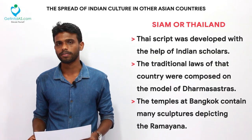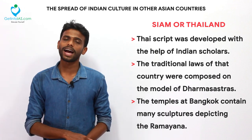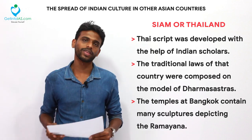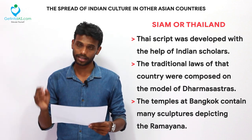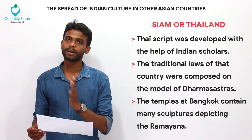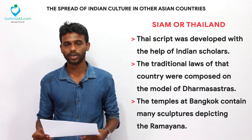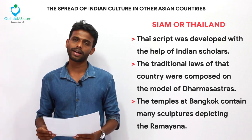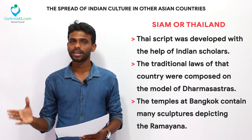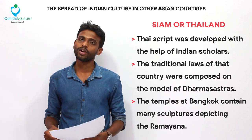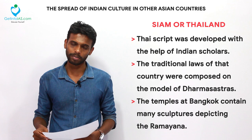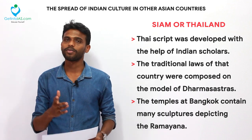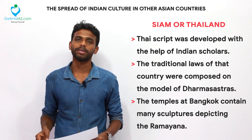The Thai script was developed by Indian scholars, and the traditional laws of Thailand are equivalent to India's Dharmasastras. The temple at Bangkok contains sculptures depicting the Ramayana. Hinduism and its culture spread to Thailand, with many sculptures depicting the Hindu religion. Just as the Tibetan alphabet was developed by Indian scholars, the Thai script similarly has Indian origins.